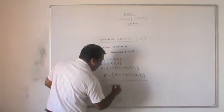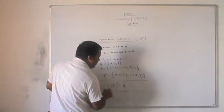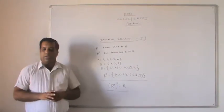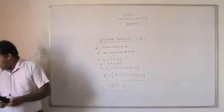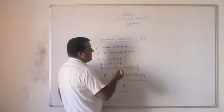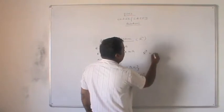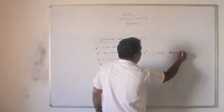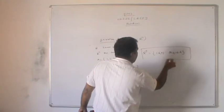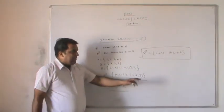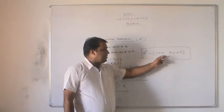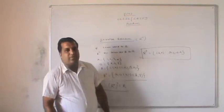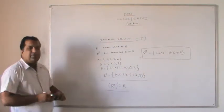Another thing to know: the inverse of inverse equals the original relation R — that is, (R inverse) inverse equals R. Mathematically, R inverse is defined as: {(b, a) such that (a, b) is a member of R}. Whatever element (a, b) is a member of R, we reverse it to (b, a) — that is called the inverse relation.